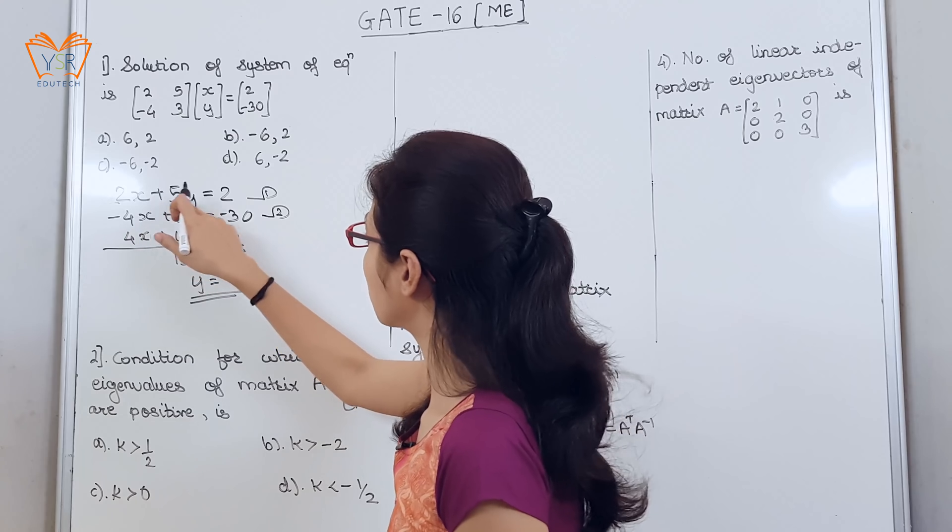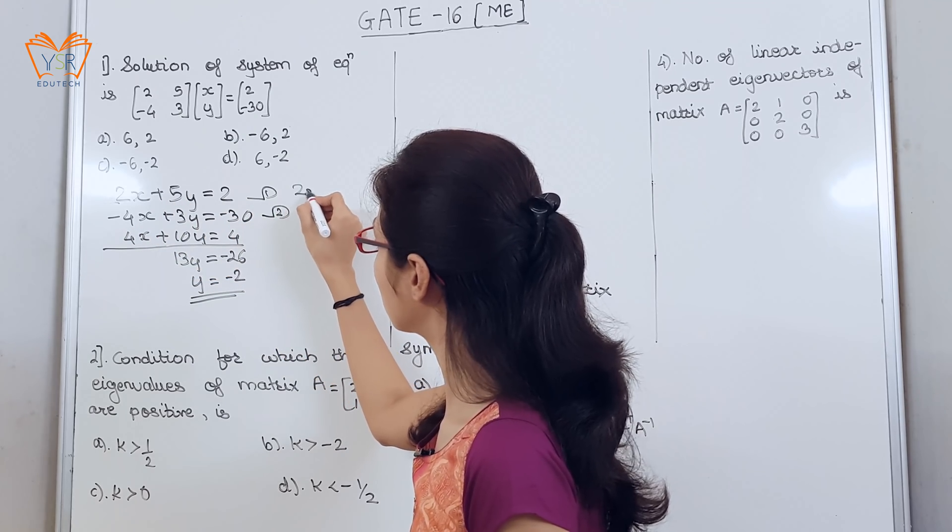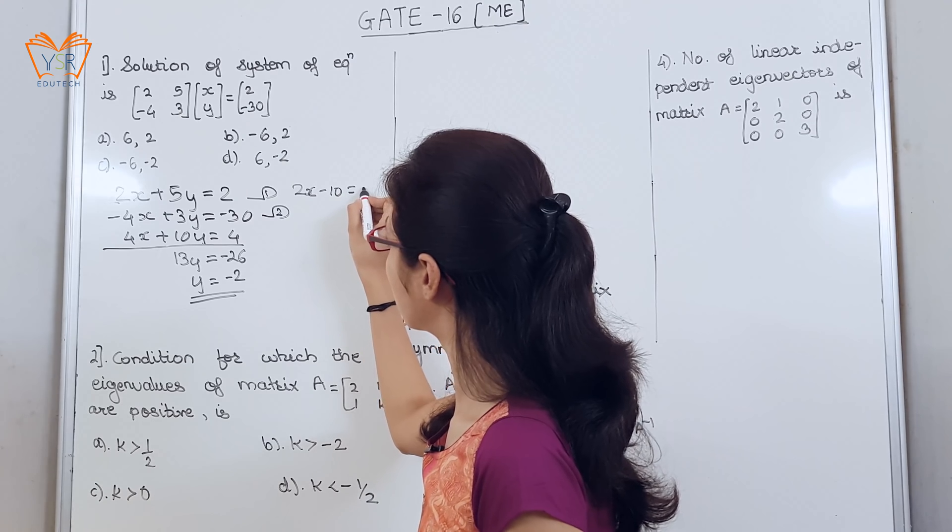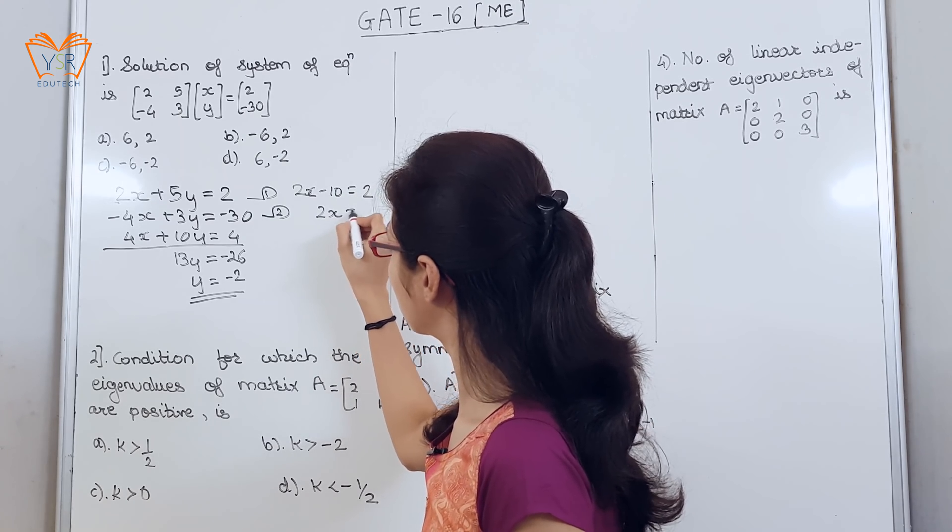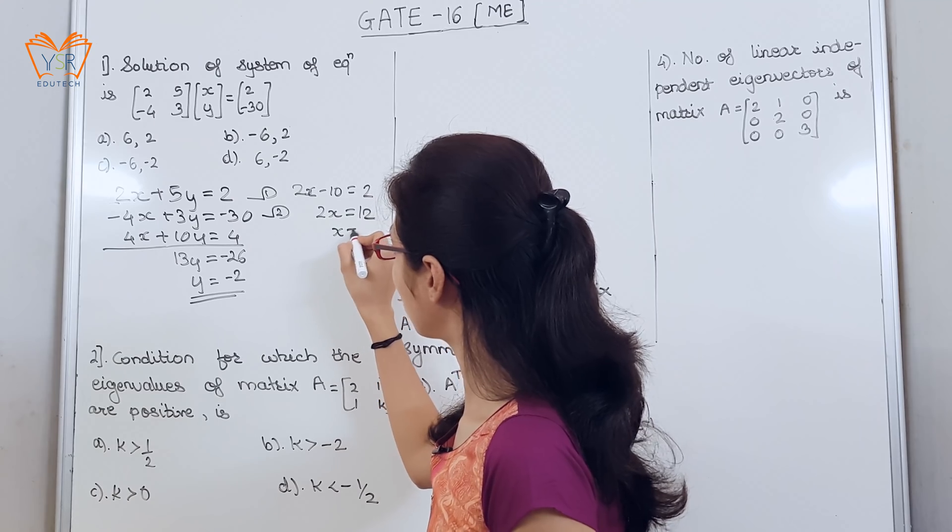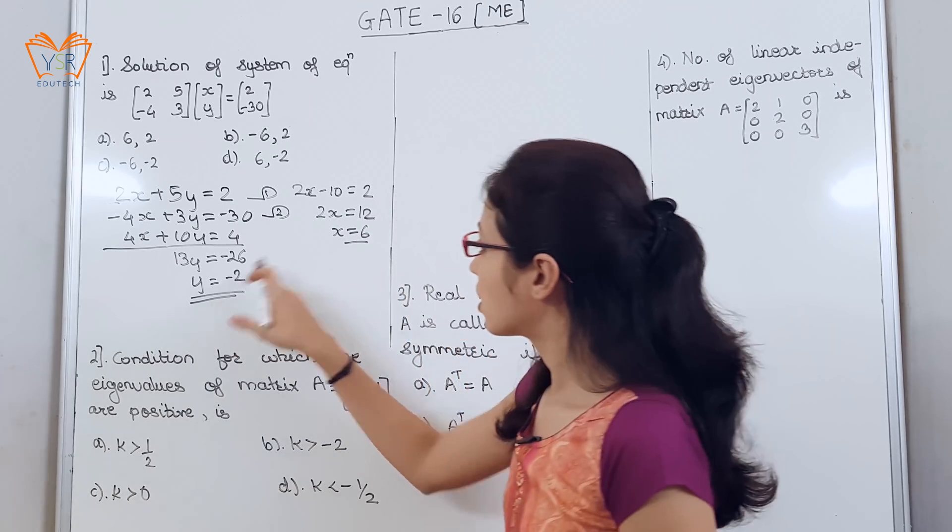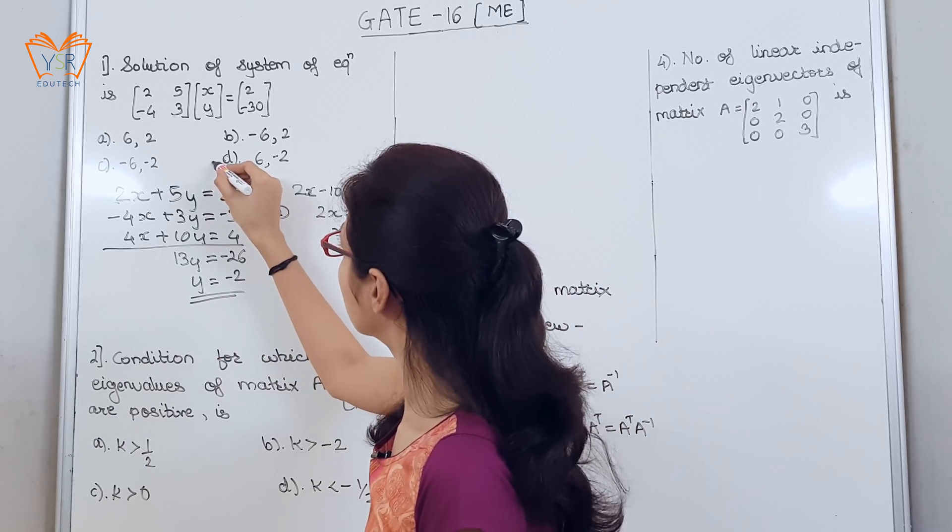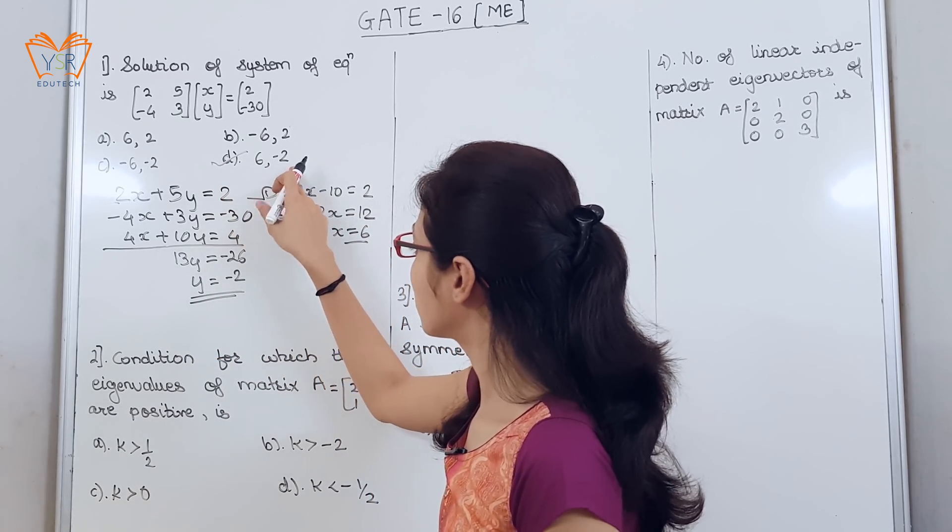We will substitute in the first equation. So, the value of x is equal to 6. x is 6, y is minus 2. So, option D is correct: 6 minus 2.